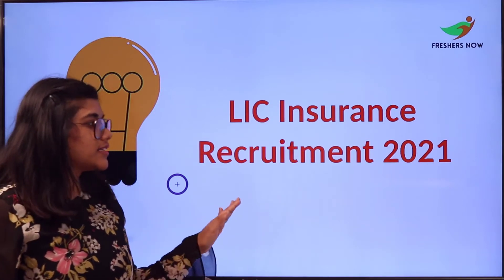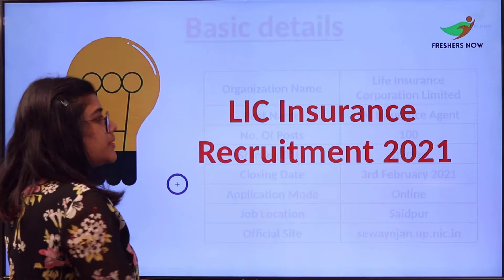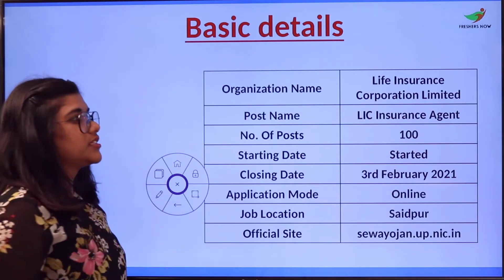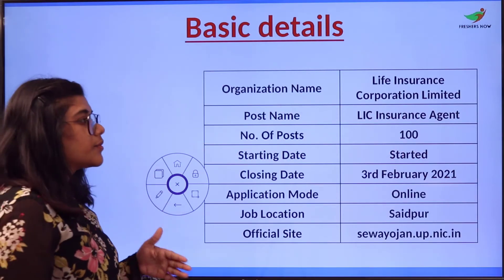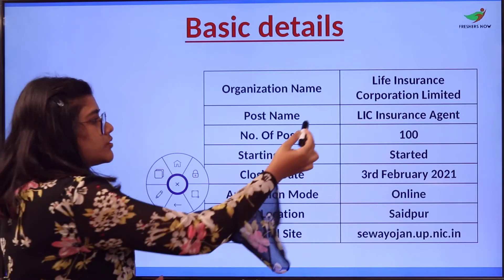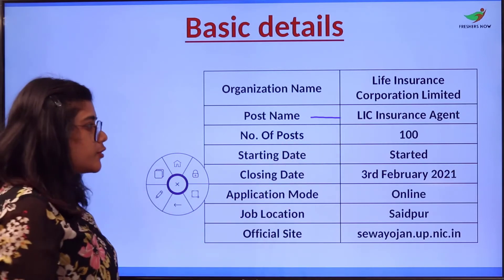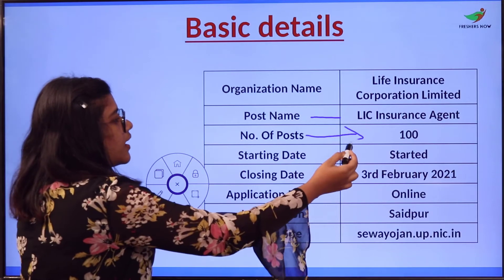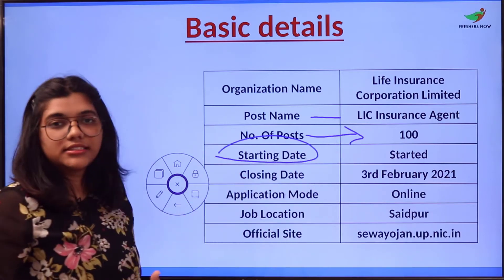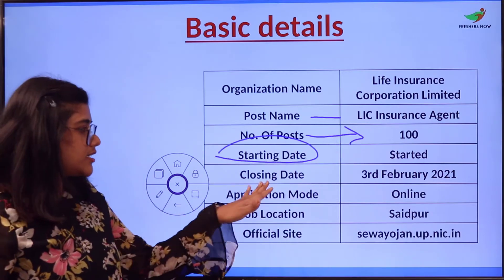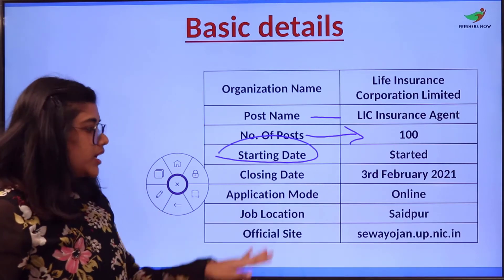Today's video is going to be about LIC Insurance Recruitment 2021. The organization name is Life Insurance Corporation Limited, the post name is LIC Insurance Agent, and the number of vacancies which are open are 100. The starting date has already begun and the last date will be 3rd of February 2021.